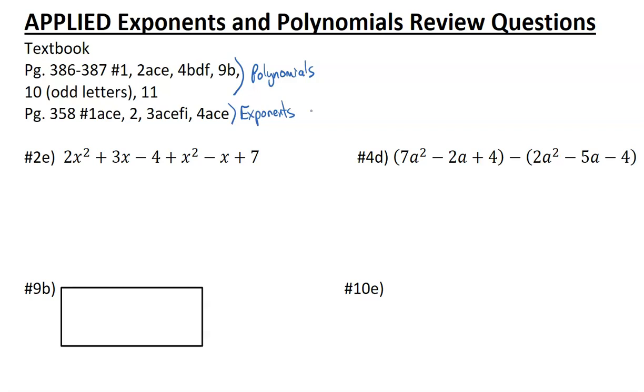The first question is number 2e on page 386. It says simplify by adding or subtracting the like terms. So the key here is simplify. In this case, we're going to identify the like terms. This 2x squared and this x squared are like terms because they have the same variable to the same power. It doesn't matter what the number in front is.